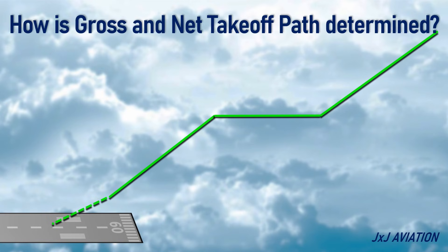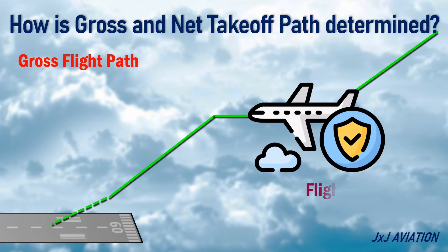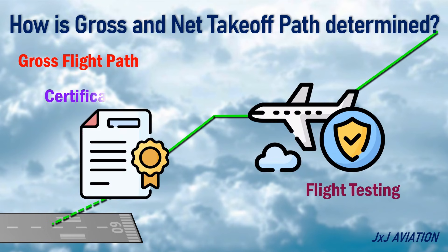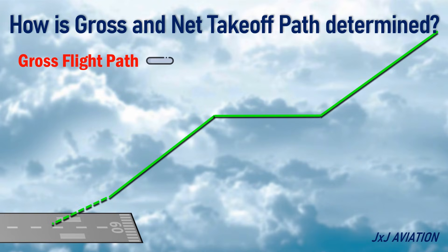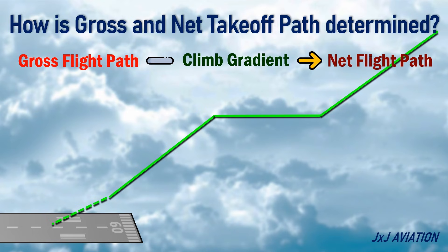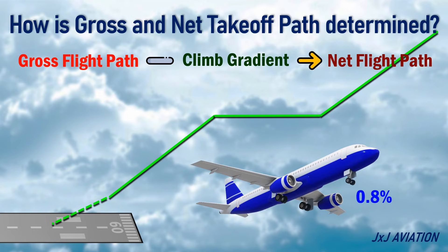How is the gross and net takeoff flight path determined? The gross flight path is determined during the flight testing and certification process. When the gross flight path is reduced by a specific climb gradient, the net takeoff flight path is obtained. The reduction for a two-engine aircraft is 0.8%. The gradient reduction is applicable in the first, second, and fourth takeoff segments.